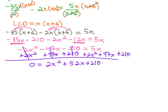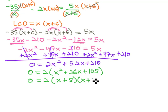We know we can solve this equation by factoring, starting with the greatest common factor of 2, leaving x squared plus 26x plus 105. And that 105 is divisible by 5 and 21, so we've got x plus 5 and x plus 21.